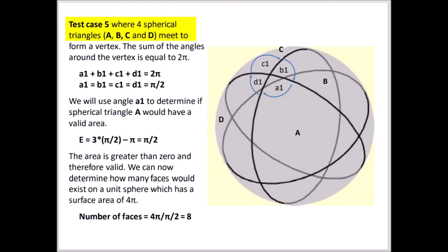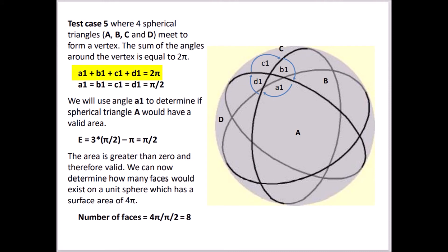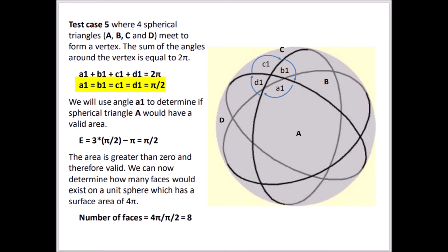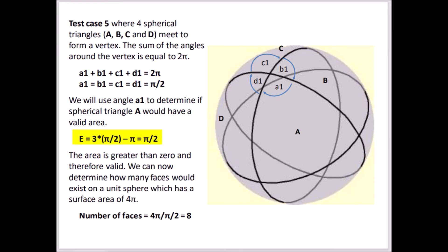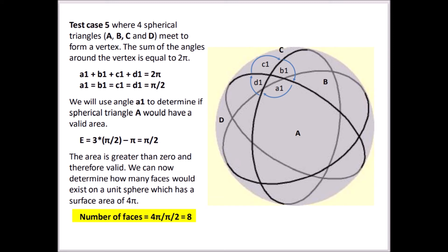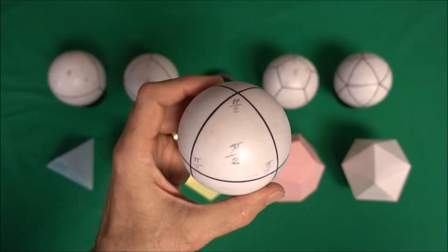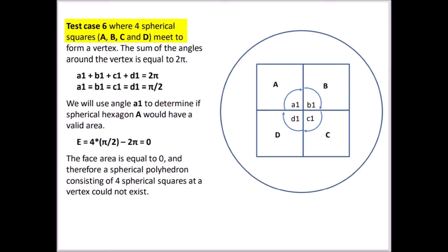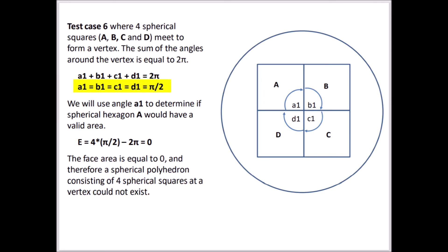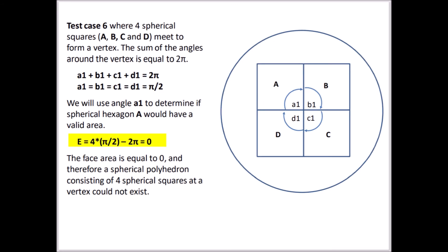For test case 5, four spherical triangles meet at a vertex where the sum of the angles equals 2π, and the internal angles compute to 2π/4 (i.e., π/2). The area of the spherical triangle results in π/2 — a valid area. Knowing the sphere's area is 4π, eight spherical triangles would be required, corresponding to a spherical octahedron. For test case 6, four spherical squares meet at a vertex with angles summing to 2π, and the internal angle computes to π/2. The computed area of the spherical square is zero, indicating this is not a valid spherical polyhedron.